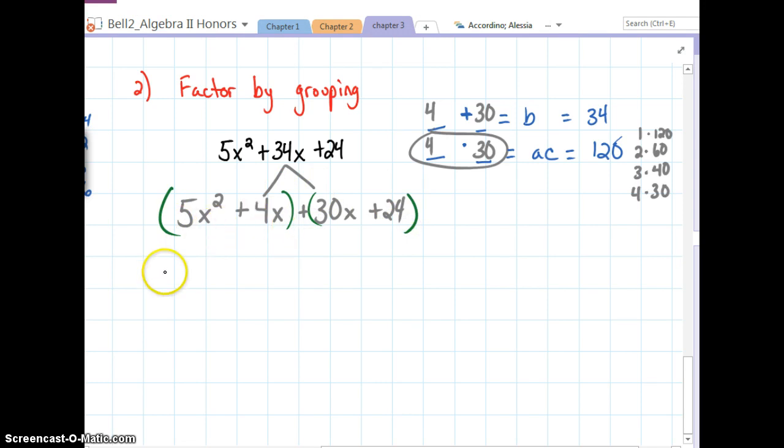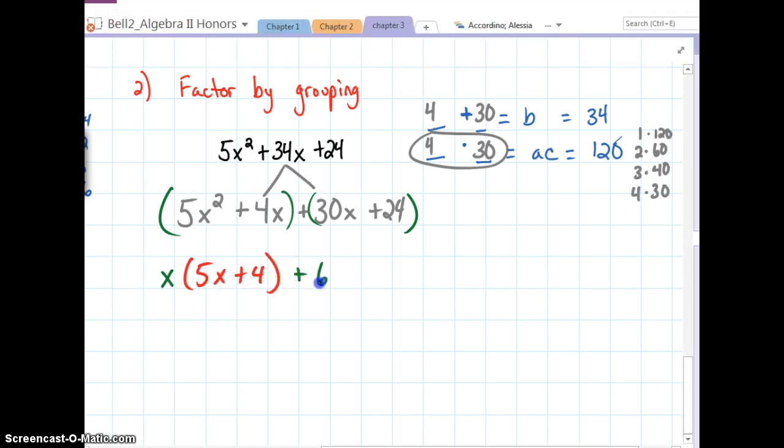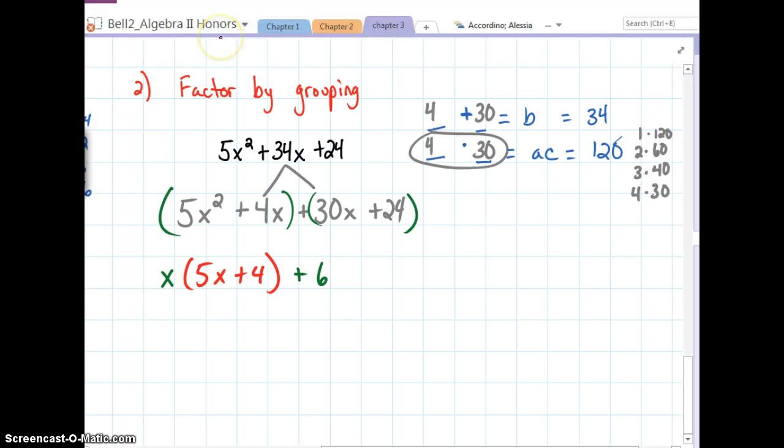We're going to factor out the GCF here. And, we're going to factor out the GCF here. And, if you do it correctly, if you pick the right numbers and everything, these parentheses, these binomials that I have in red, are going to match.